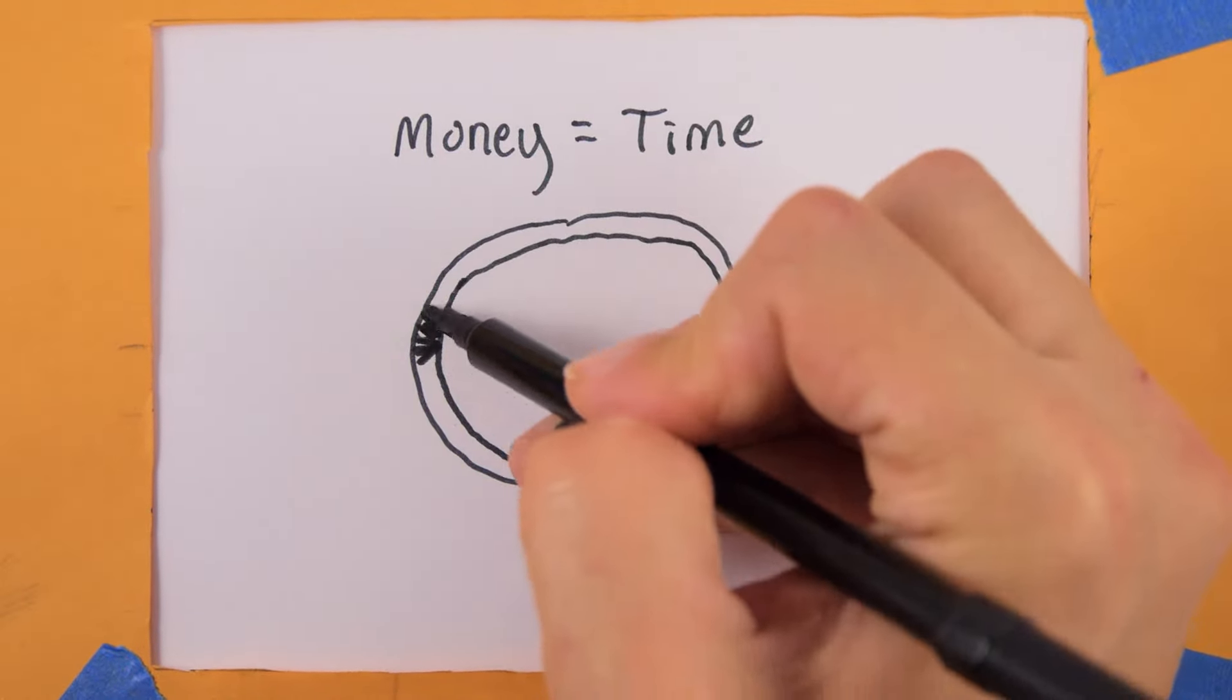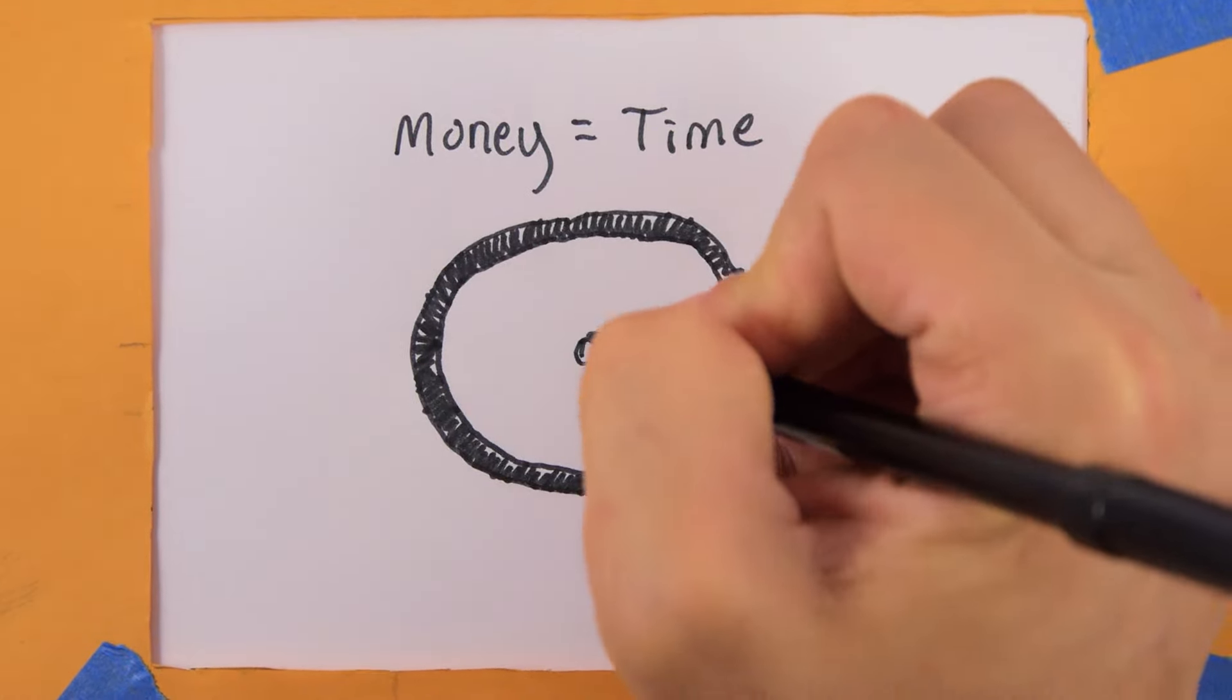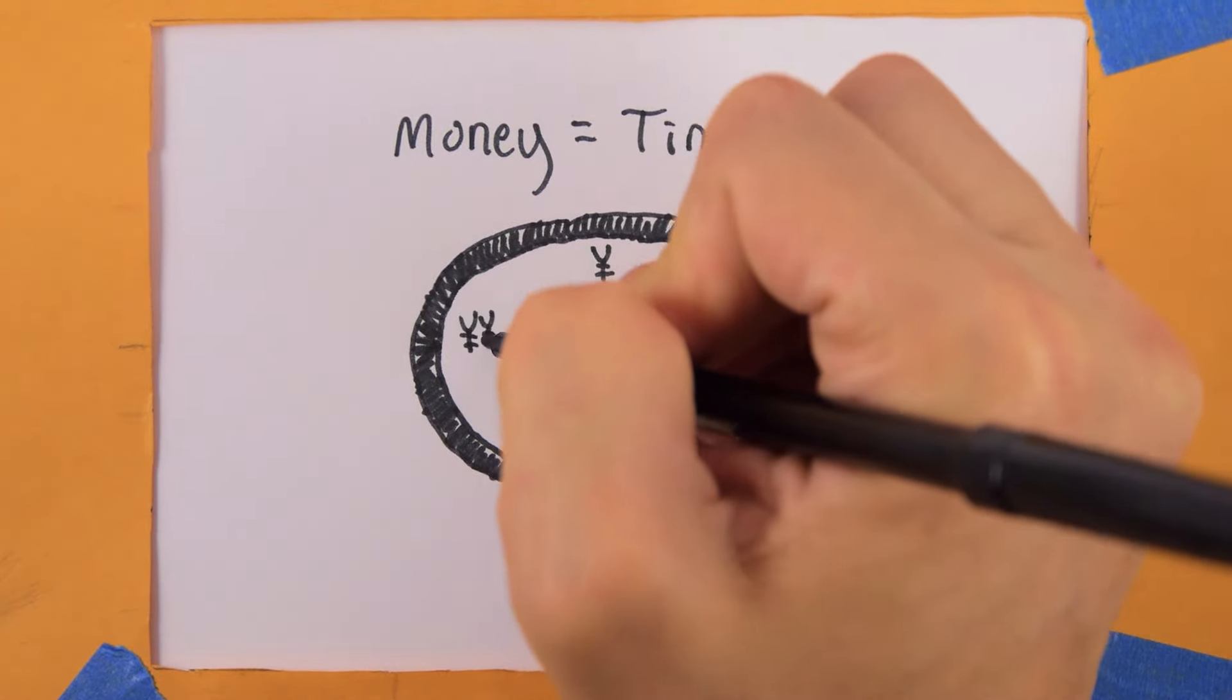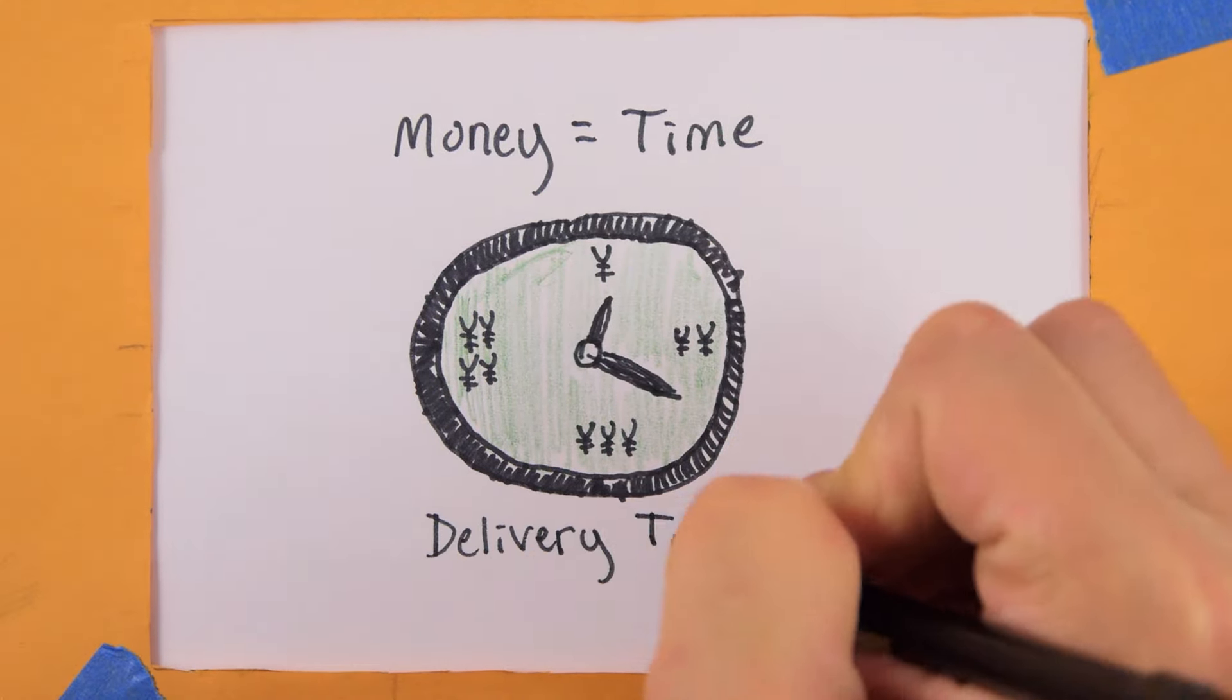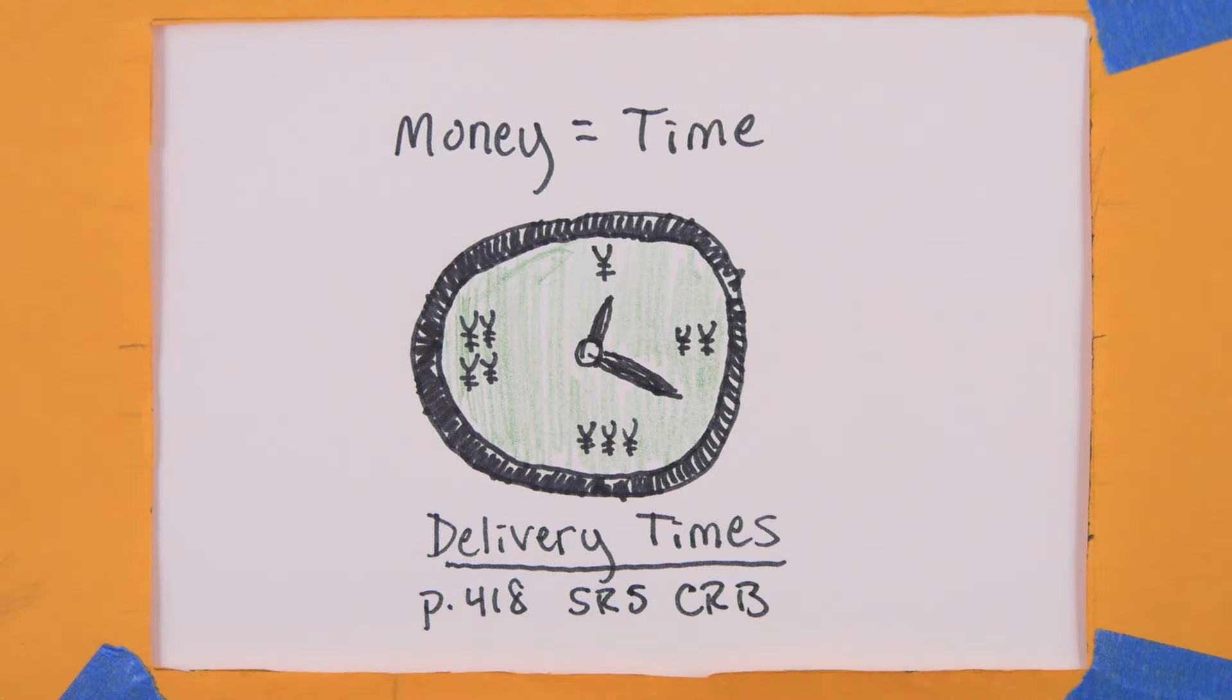The price of an item also determines how long it takes to get it. Just check the delivery times table on page 418 of the core rulebook to find out how long.